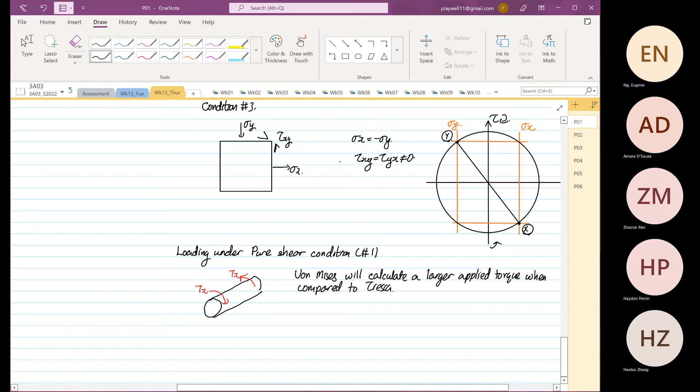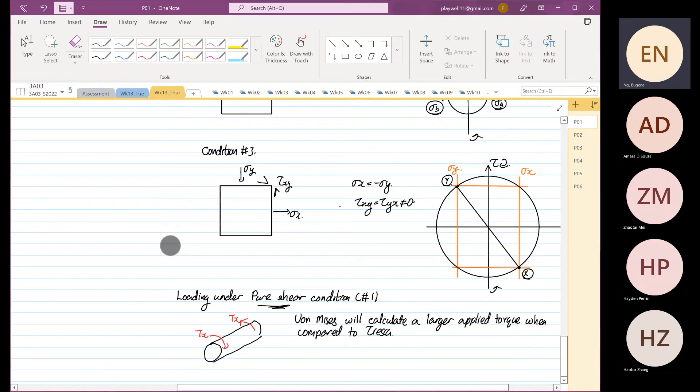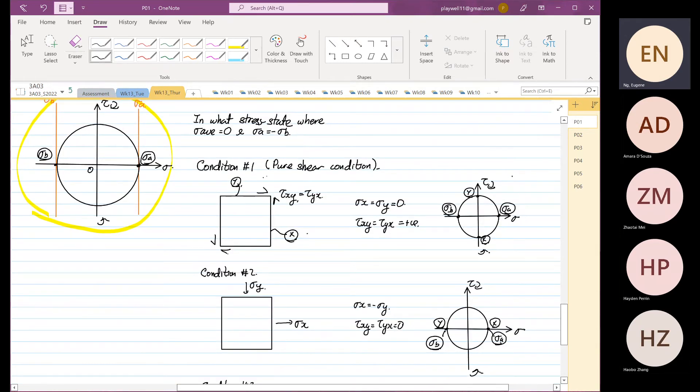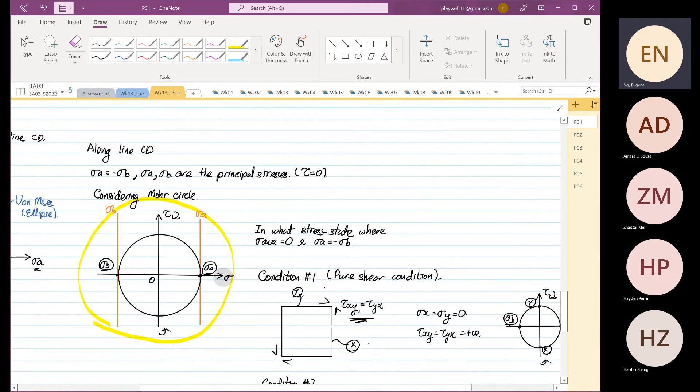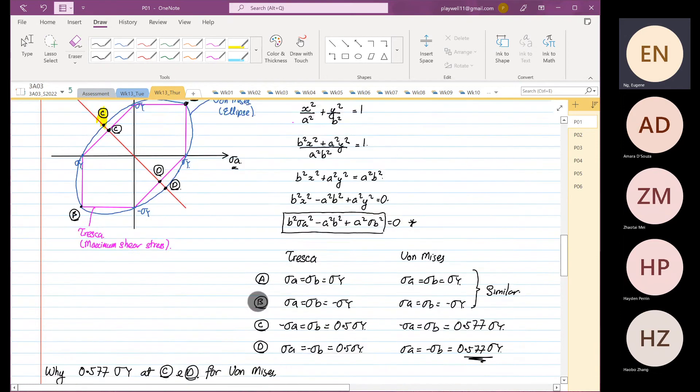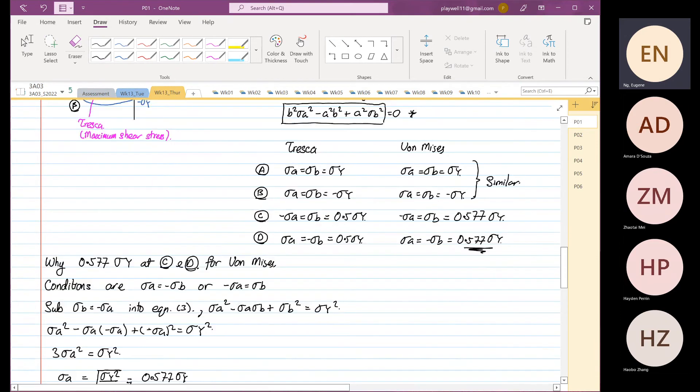If you use Von Mises criteria to calculate the torque required to prevent failure, you will get a higher torque level because the yield you found is 0.577 stress yield. We are focusing on pure shear condition, condition number one, along line CD.